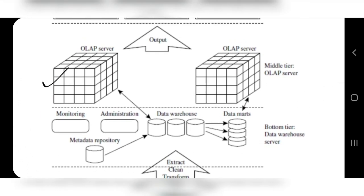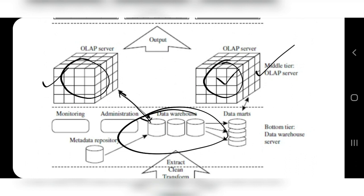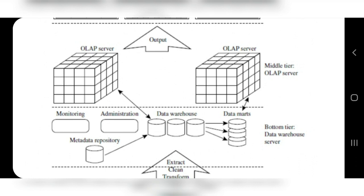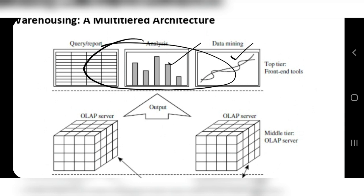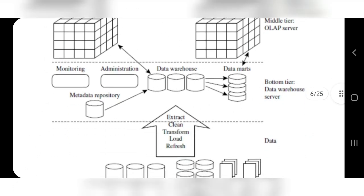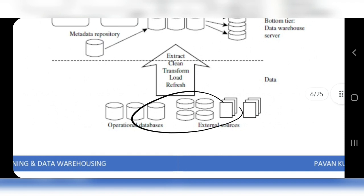The middle tier contains the OLAP server with data cubes, which provides further refined processing of the data warehouse content to give a clearer understanding of the data across different dimensions. The top tier is the front-end layer for end users, showing final outputs like bar graphs, charts, and reports. The middle tier is for data scientists, the bottom tier for database designers, and the top tier for end users.